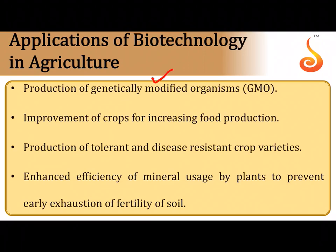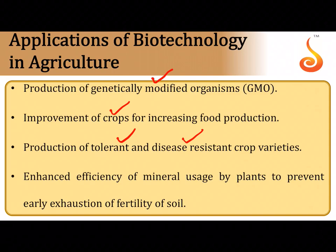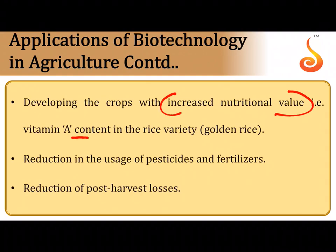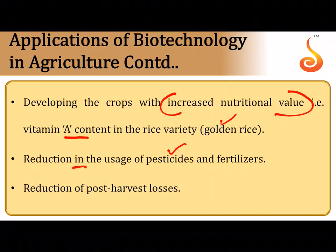In agriculture, biotechnology is used for production of genetically modified organisms, improvement of crops, production of tolerance in plants — for example, heat tolerance and salinity tolerance — and enhanced efficiency of mineral usage. It also involves biofortification, such as increasing vitamin A content in golden rice, and can reduce the usage of synthetic pesticides and fertilizers, reduce post-harvest losses, and obtain greater yield.